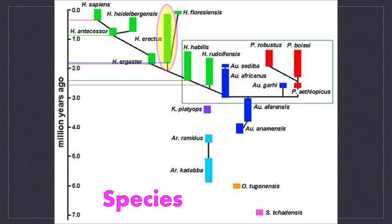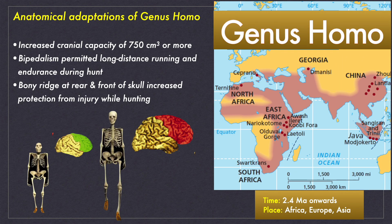The first Homo species to evolve was Homo rudolfensis, who lived between 2.4 and 1.8 million years ago in Africa. Almost at the same time, Homo habilis arose between 2.3 and 1.4 million years ago, also in Africa. Homo erectus was the longest-living Homo species, who lived between 1.9 and 0.1 million years ago, with three different subspecies in three different locations. Homo antecessor and Homo heidelbergensis were two other Homo species who lived in Europe. After evolving in Africa, the genus Homo spread to Africa, Europe and Asia as shown on the map.